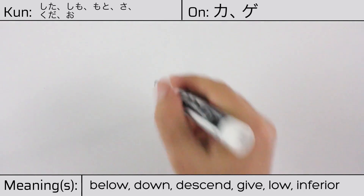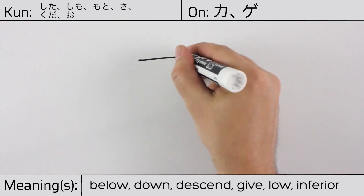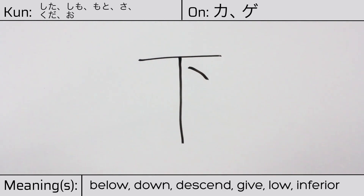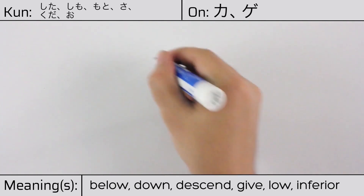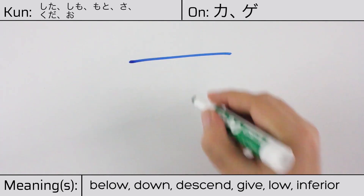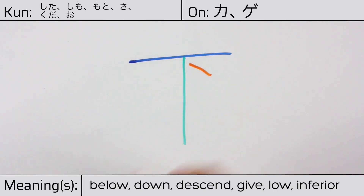Here is the stroke order. This character is made up of the following radicals or parts: Wan, ichi, a vertical stroke, and a ten, or a dot radical.